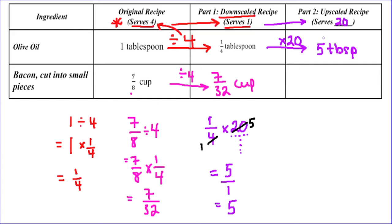Some of you may have noticed there's a slightly different way to do this. In this case, 20 is a multiple of 4. So instead of upscaling the downscaled recipe, I can actually just upscale the original recipe. This only works easily if your upscaled number is a multiple of the original recipe. Since 4 times 5 equals 20, I'm going to use the original recipe to find the bacon: seven eighths times 5 over 1.